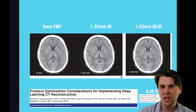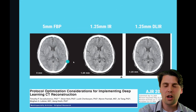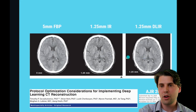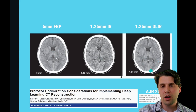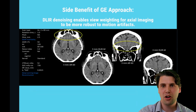This same thing can be appreciated on clinical data here. You can see in the five-millimeter case there are some structures which are not seen in the 1.25-millimeter reconstructions because these are thinner slices. But comparing the 1.25-millimeter reconstructions, you can see that the DLIR has significantly lower noise in comparison with the iterative reconstruction.